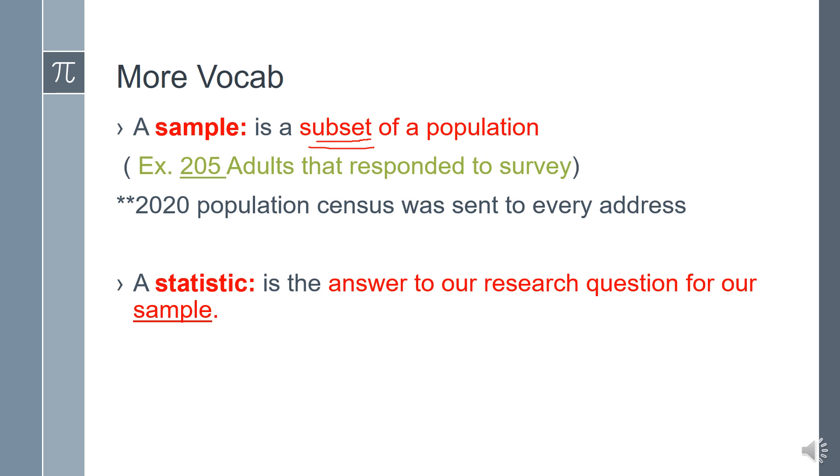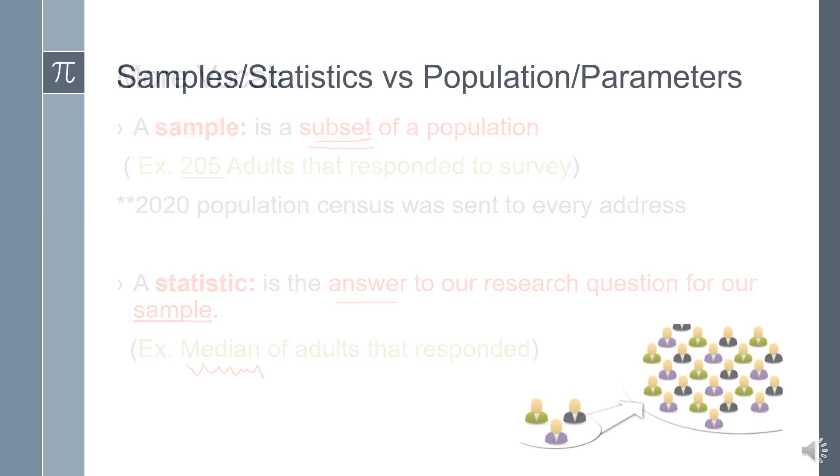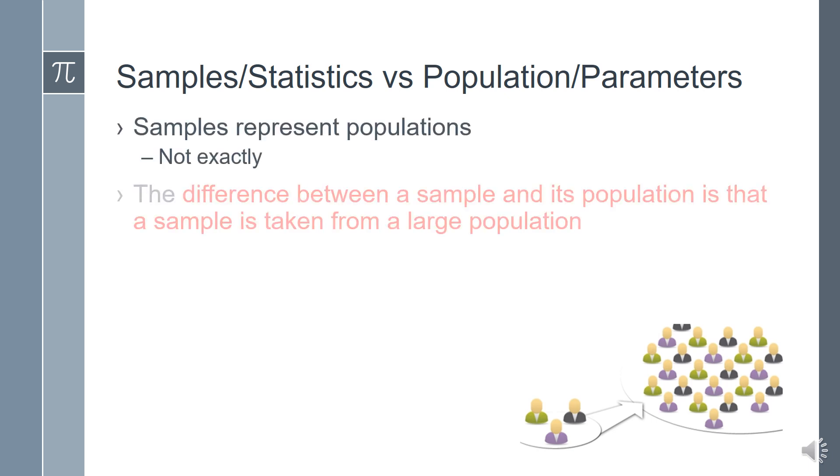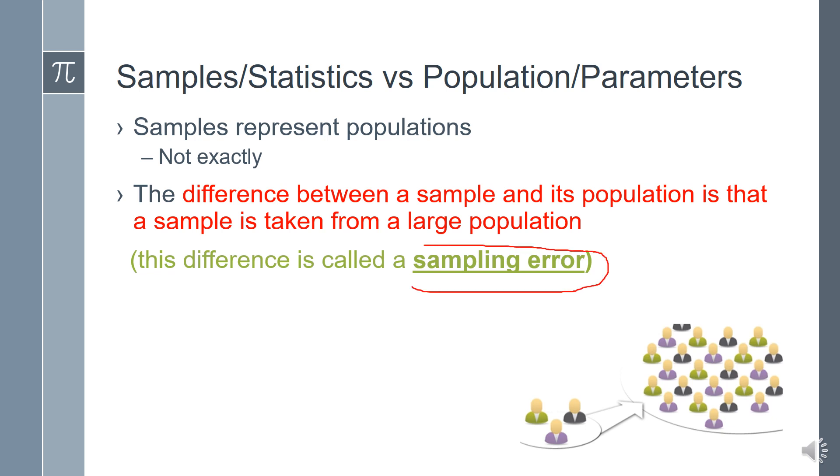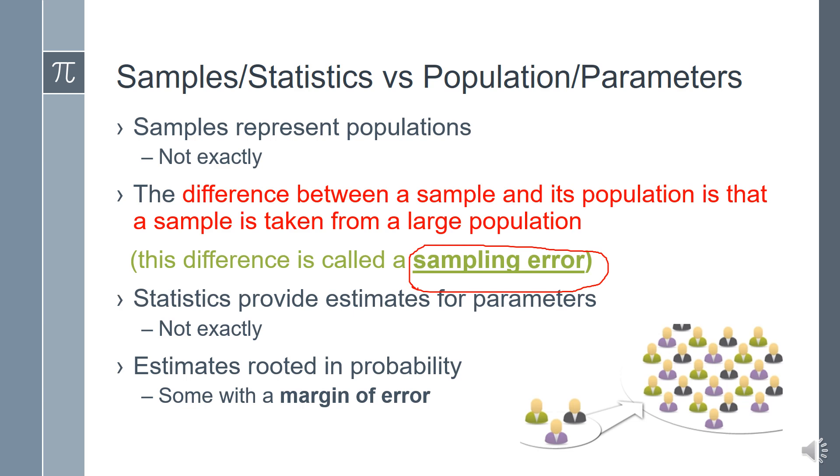Next is a statistic, which is the answer to our research question for the sample. Sometimes we can talk about the statistic such as being the median. Remember, the median is the middle-most number of a set. Next up is to talk about the difference between a sample and its population, and that is a sample is taken from a large population. That difference is what we refer to in statistics as a sampling error. Another vocabulary word for today to see on the screen is what is called margin of error. We will get into the specific definition later in our course.